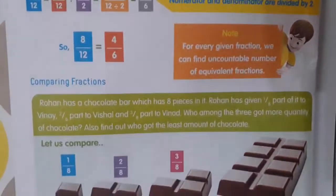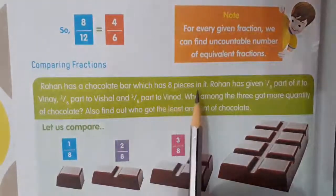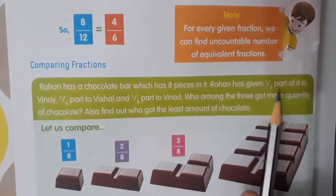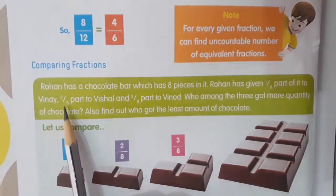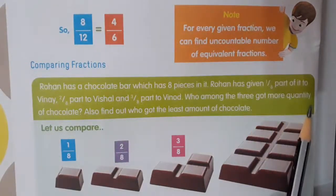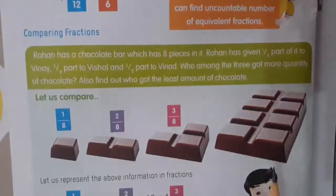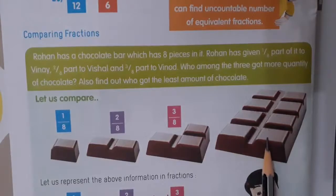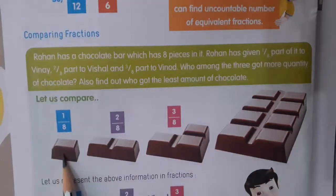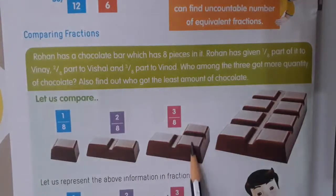Next concept: comparing fractions. Rohan has a chocolate bar which has 8 pieces in it. Rohan gave 1 by 8 part to Vinay, 2 by 8 part to Vishal, and 3 by 8 part to Vinod. Who among the 3 got more quantity of chocolate? Also find out who got the least amount. The chocolate is divided into 8 parts, so the 1st friend received 1 piece, the 2nd received 2 pieces, and the 3rd received 3 pieces.